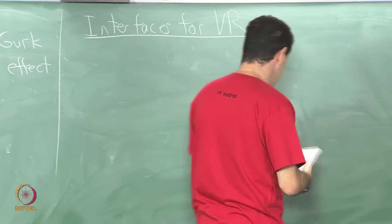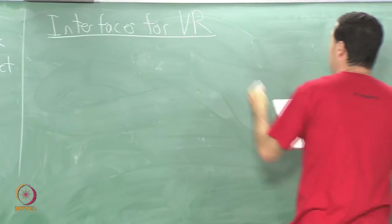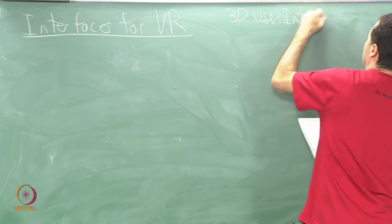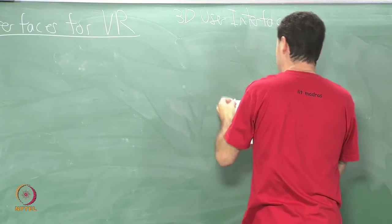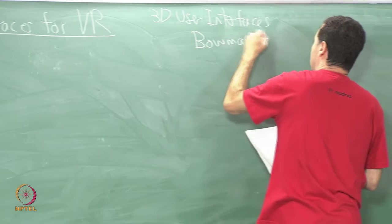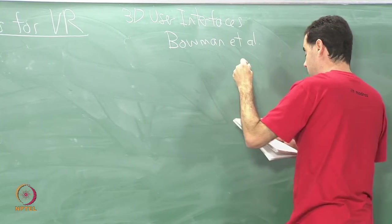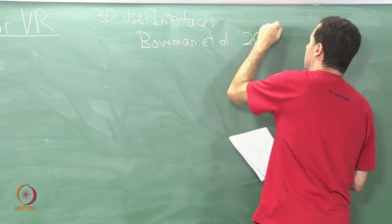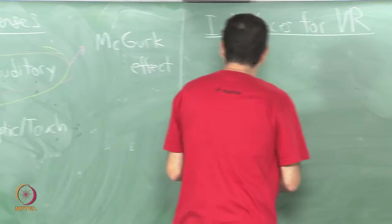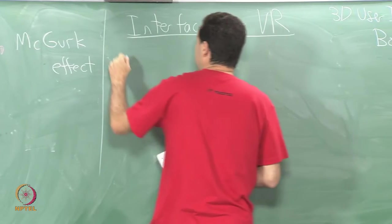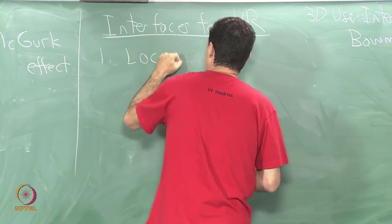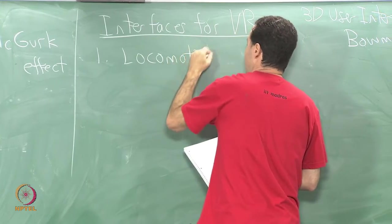I would like to give some high level categories. There is a nice book called 3D User Interfaces by Bowman et al which you might find interesting reading. So I just want to give some general categories and we will talk about these in more detail next time.